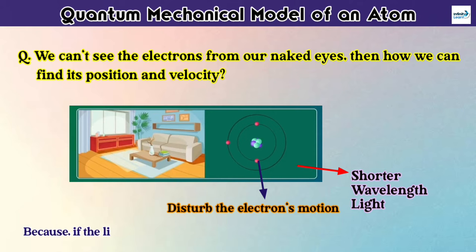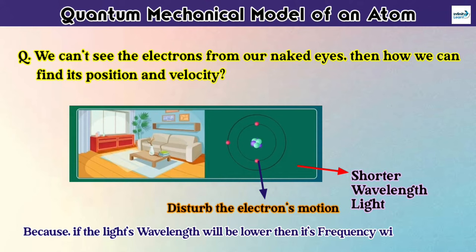Because as I said, if the light's wavelength will be lower, then its frequency will be higher. It means its energy will be higher. So that's why it will disturb the motion of electrons.